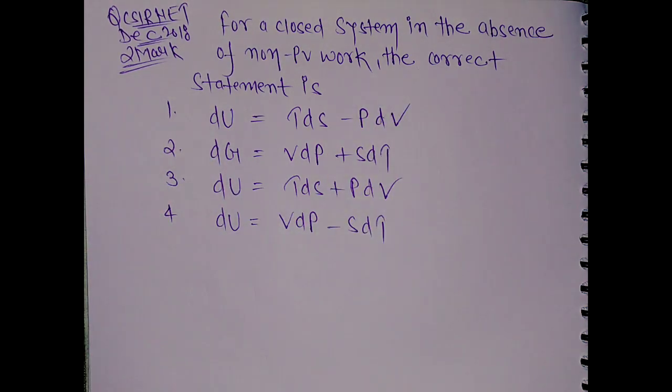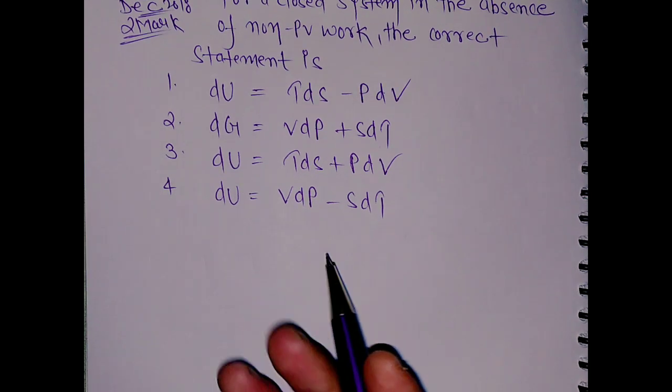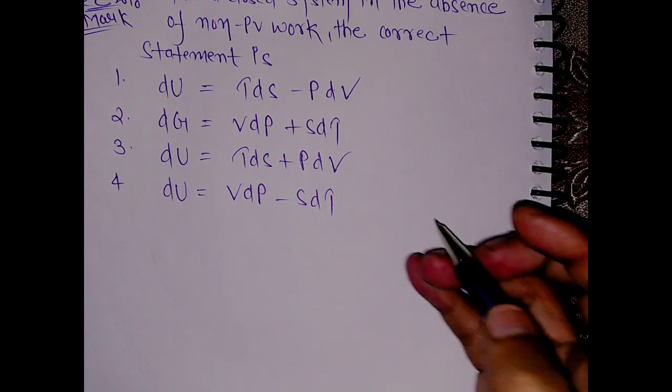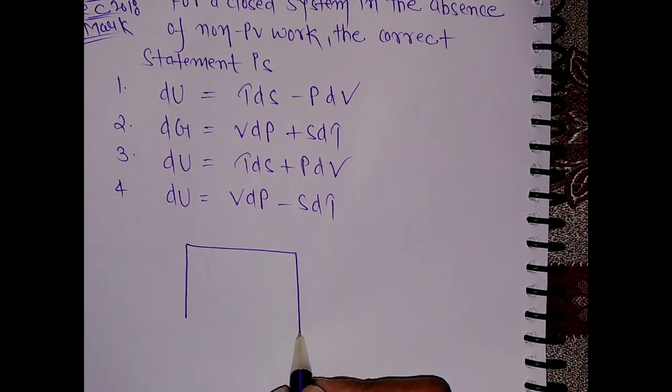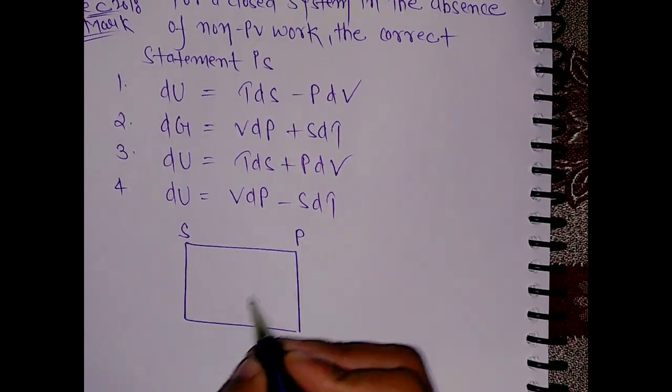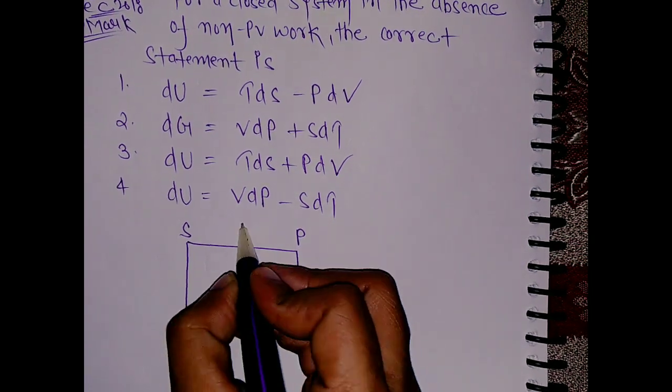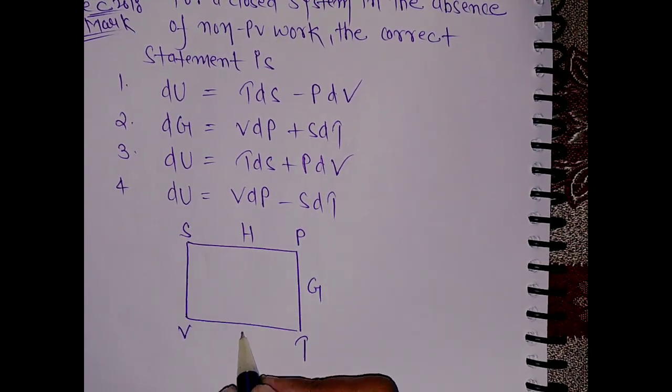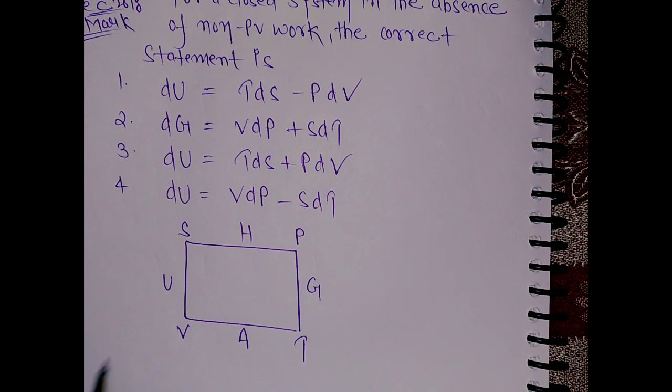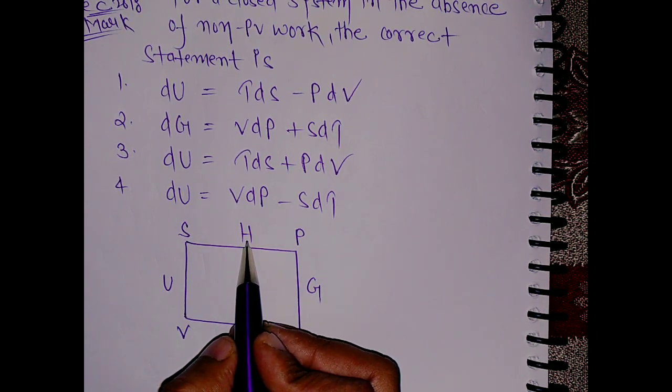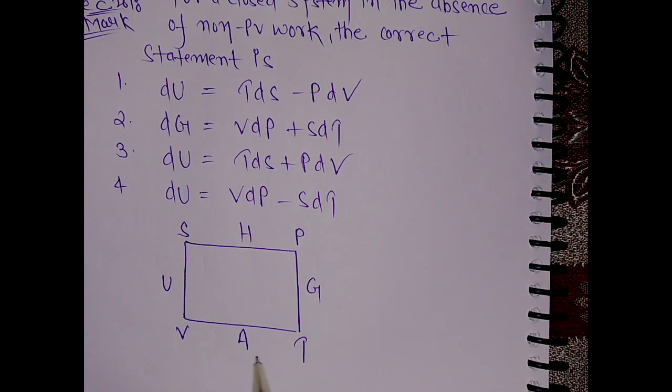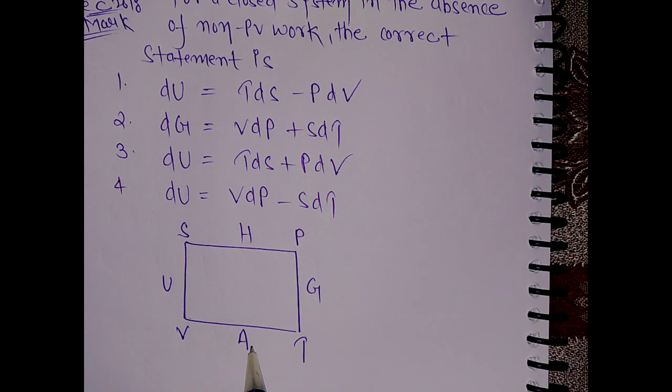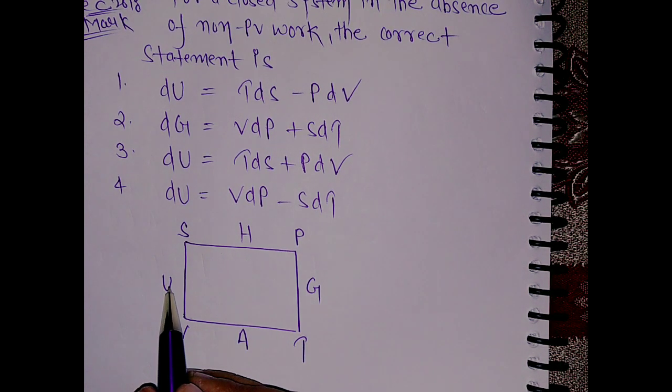What you have to do is just draw the thermodynamic square. This is S, P, V, T, H, G, A, U. This is your entropy, this is your enthalpy, pressure, this is your Gibbs free energy, temperature, this is Helmholtz energy, this is volume, and this is your internal energy.